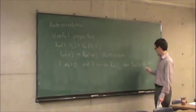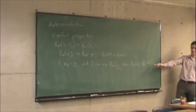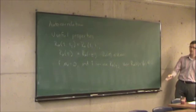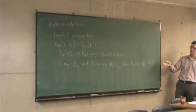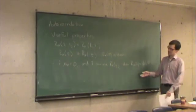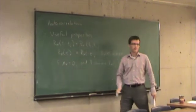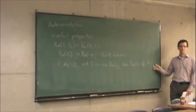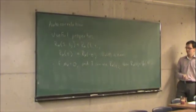To show that, Rx of zero is the expected value of x of T1 times x of T1 plus zero. So in other words, it's the expected value of x of T1 squared. And if the mean of the process is zero, the expected value of T1 squared is the variance of the process.